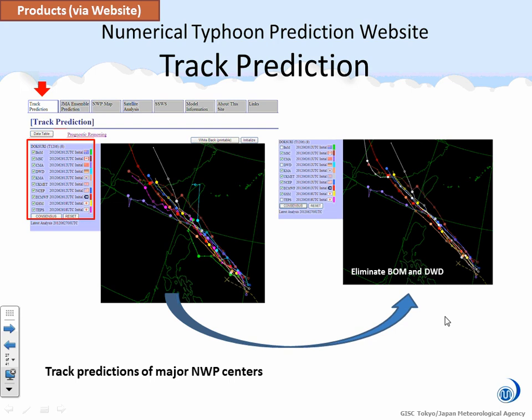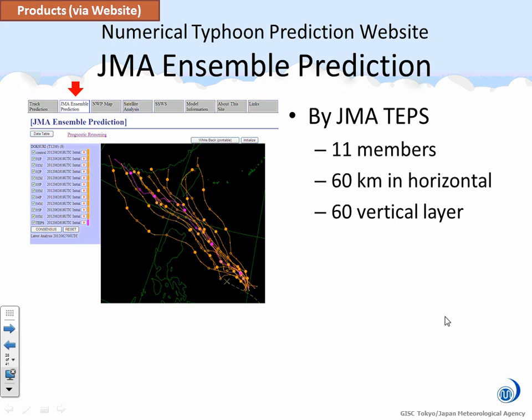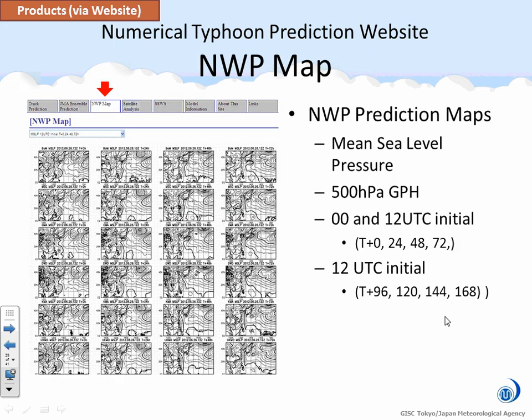We can check or uncheck the track of each center and get an eliminated map on the right side. Next is JMA Ensemble Prediction. This is multiple forecast tracks produced by running JMA's Typhoon Ensemble Prediction System, TEPS, from slightly different initial values — 11 members, 16 kilometers horizontal resolution, and 60 vertical layers. Next is the numerical weather prediction map. We can refer to NWP maps from the Numerical Typhoon Prediction website, including mean sea level pressure and 500 hectopascal geopotential height maps.